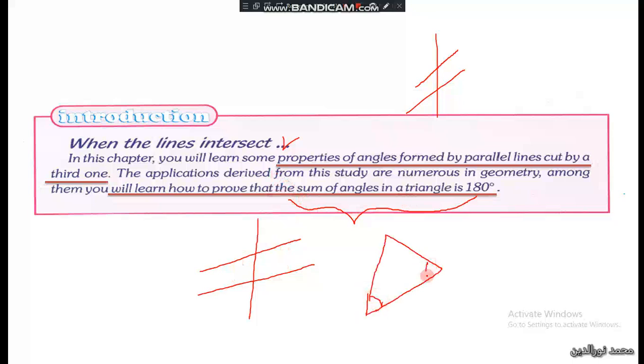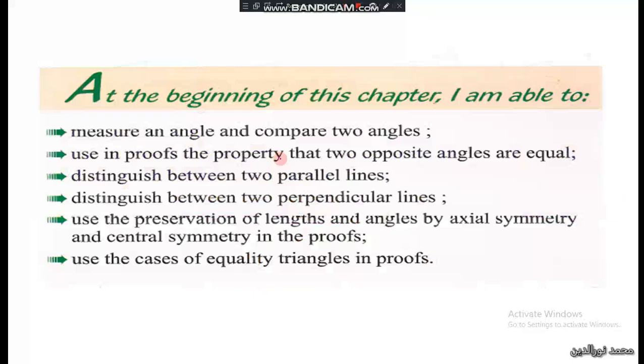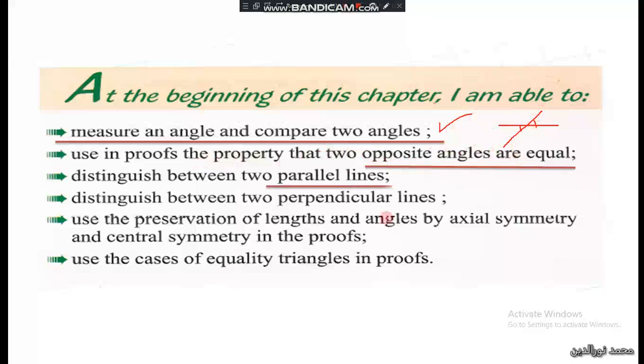At the beginning of this chapter, I am able to measure an angle and compare two angles, use in proofs the property that opposite angles are equal—vertically opposite angles are equal—and distinguish between parallel lines, concurrent lines, and perpendicular lines.